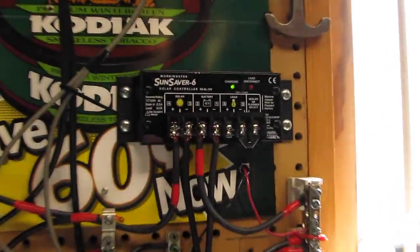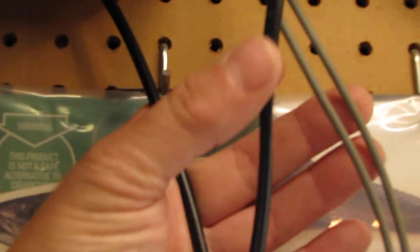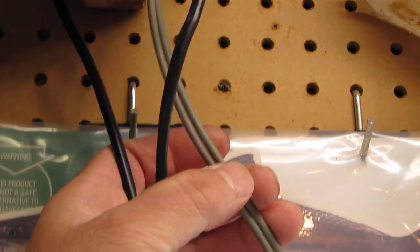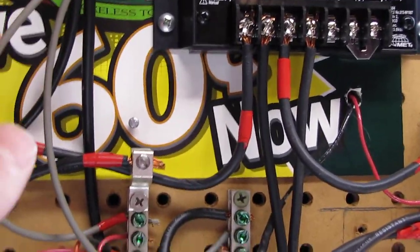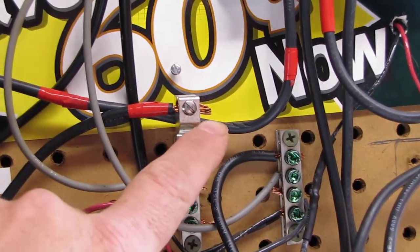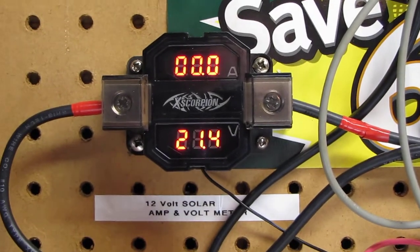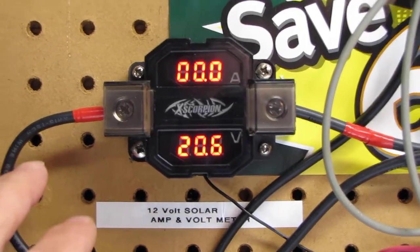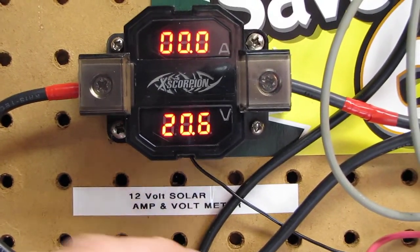Here's the Sun Saver 6. My solar panel wires are right here, that's what you saw on the roof. They're coming down here and they're coming into this bus bar here, all combined. This is a voltmeter I got from Missouri Wind & Solar. It's really nice. It just shows me how many volts I'm putting out from my solar panel.